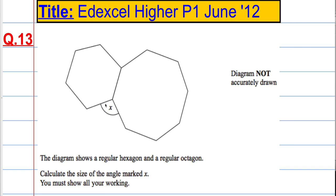The first thing I'd like to work out is this angle here, this red angle, and then I would also like to work out this blue angle. Then I can add them up and take them away from 360 to get x because the angles at a point add up to 360 degrees.